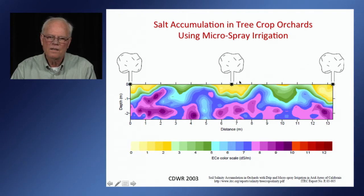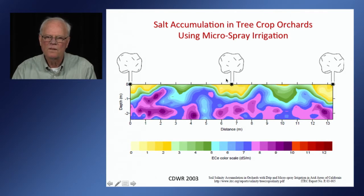So you'll see a very uneven pattern of rooting when you have these microsprinklers.